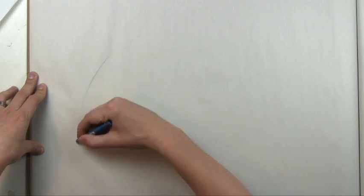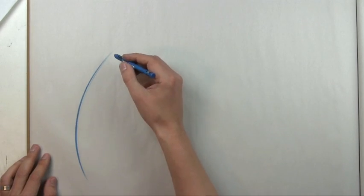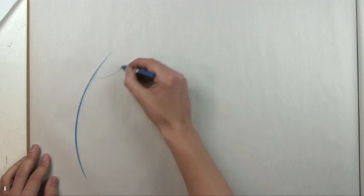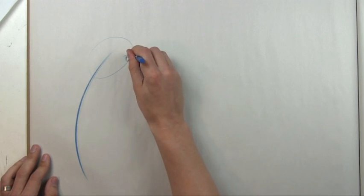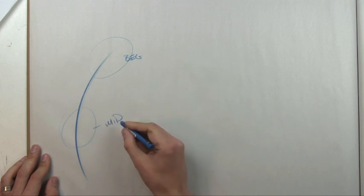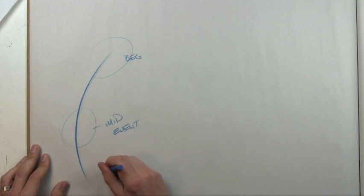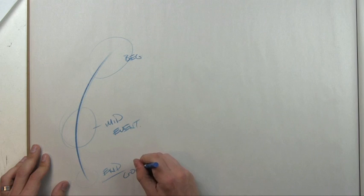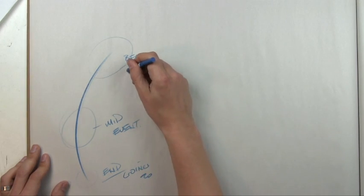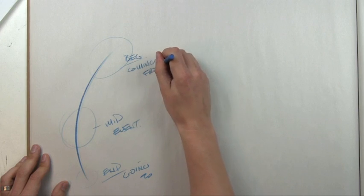It has, here I'll draw it again. There's three parts to just the line itself. There's what I call the beginning, and there's like the middle or the event, and there's sort of the end, or even better, is really like going to, and this would be coming from.